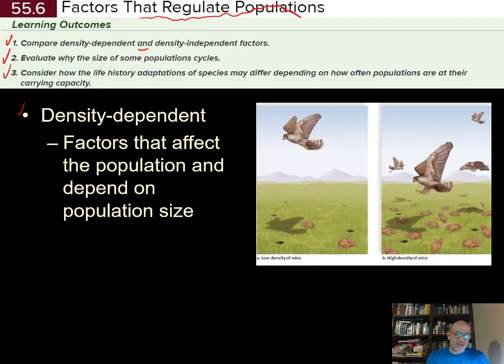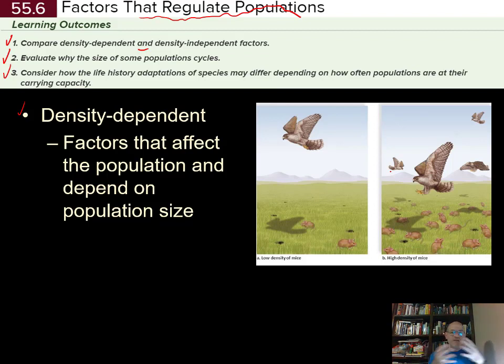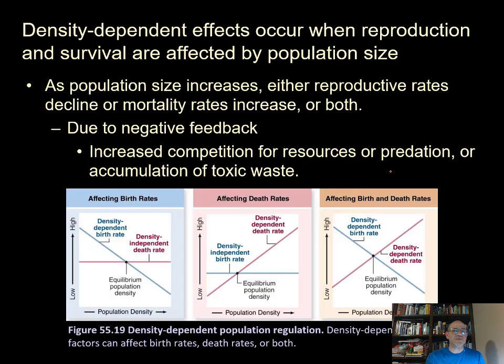That's a big difference from density-dependent factors — how many are out there will influence at what rate you have births and deaths. The rate actually changes with density.